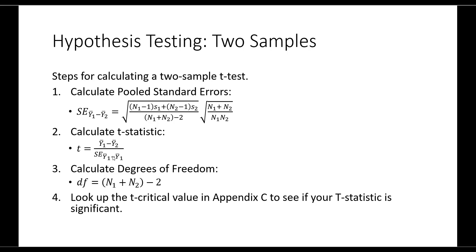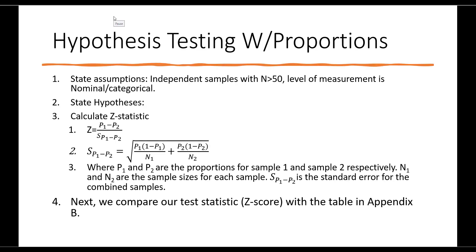Finally, we can use our t-statistic and degrees of freedom to look up the t-critical value in Appendix C to see if our t-statistic is significant. So far we've talked about hypothesis testing with means — comparing a mean to a specified value or comparing two means. Let's now talk about hypothesis testing with proportions.